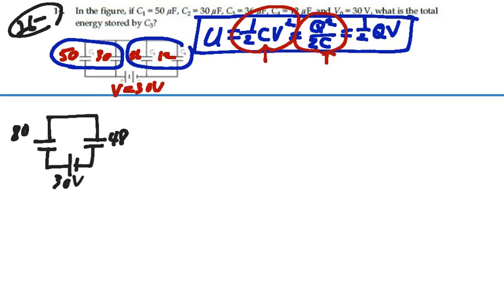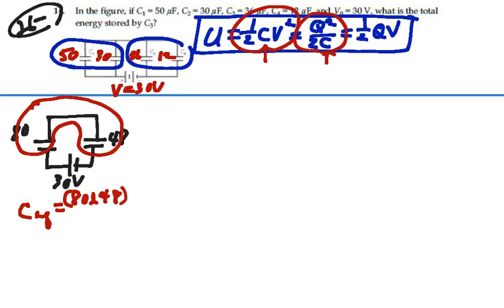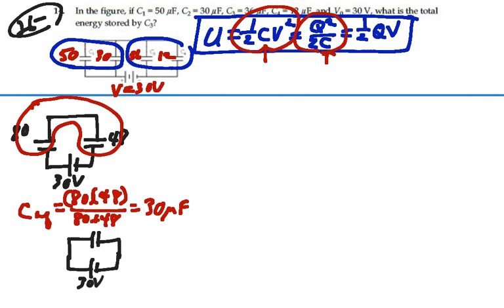Now it's pretty clear then, looking at this, that the 80 microfarads and the 48 microfarads are in series, so we want our C equivalent to be that series combination, product over the sum, 80 times 48 over 80 plus 48. That comes out to 30 microfarads. So now our final circuit simply looks like this: a 30 microfarad equivalent capacitance with a 30 volt battery.